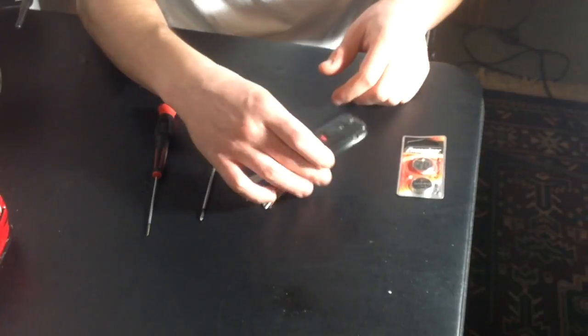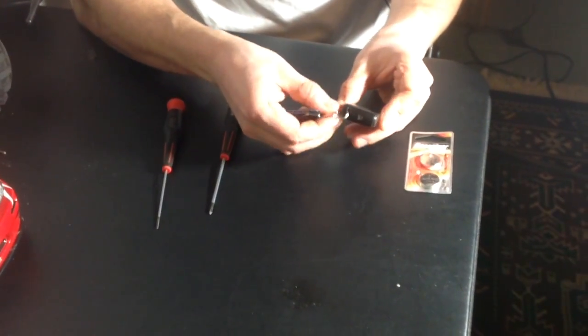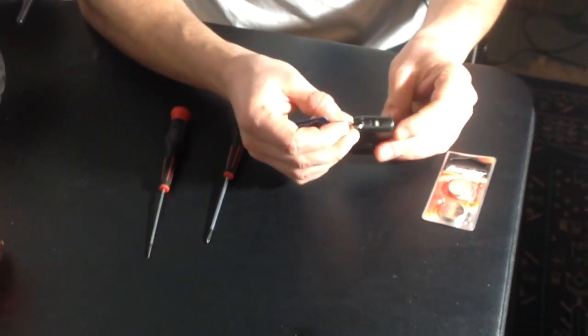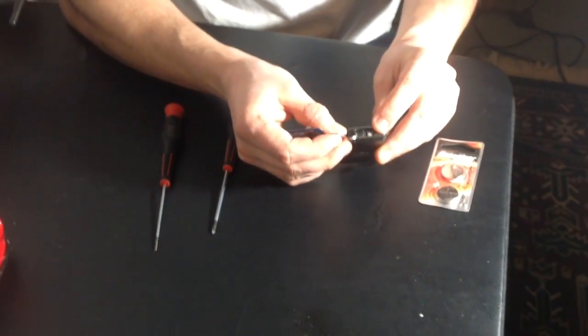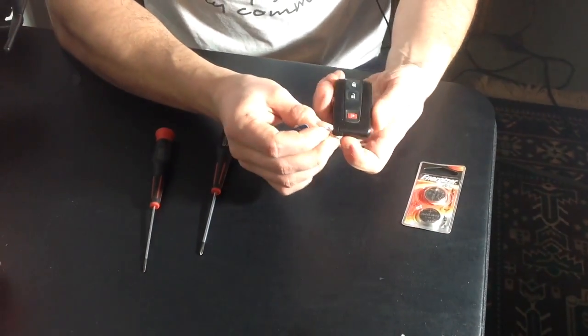Here we have this little mechanism right here. Just slide it and the key should come out. Set it aside; you don't need it for the time being. Next thing is you've got to disassemble the top cover.